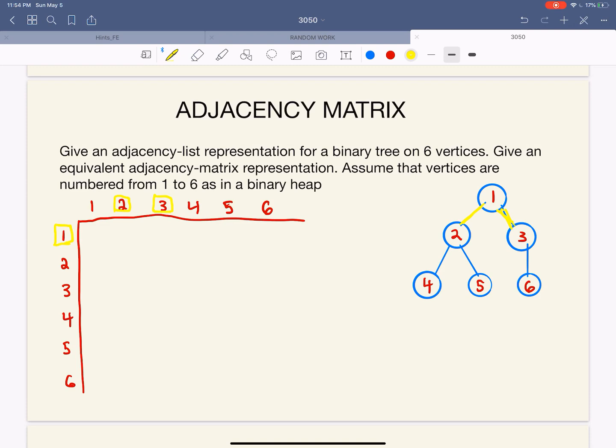So we need to go to one, and then we need to go to two and three. And since it's connected to those, we're going to put a one. And then for one, four, five, and six, we put zeros.